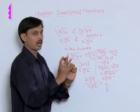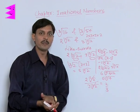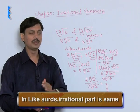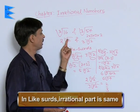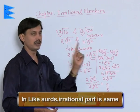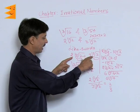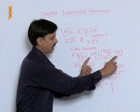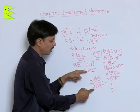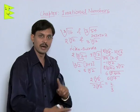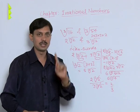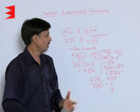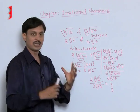So, to summarize: like surds have the same irrational part, and you can add, subtract, multiply, and divide surds only when the surds are like surds.